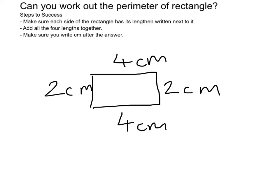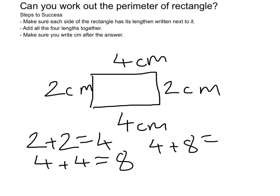Now add all four lengths together. Two plus two equals four, and four plus four equals eight. Then add those numbers together: four plus eight equals twelve.